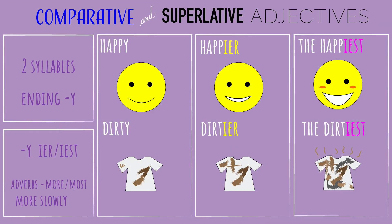These are comparative and superlative adjectives where there are two-syllable adjectives ending in Y. We add IER or IEST to the end of the adjective. For example: happy, happier, the happiest. Dirty, dirtier, the dirtiest.